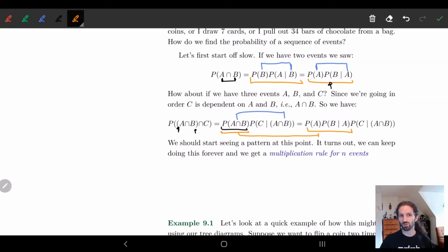Now you should start noticing a pattern. I started off with one thing, this is my first thing. Then I have two given one. Then I have my third thing given one and two. So we might imagine if I had a fourth thing, I would have four given one, two, and three.